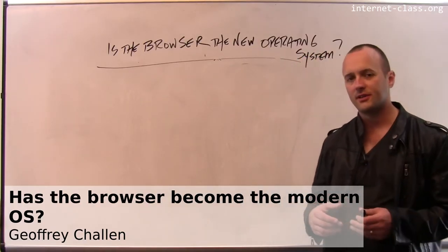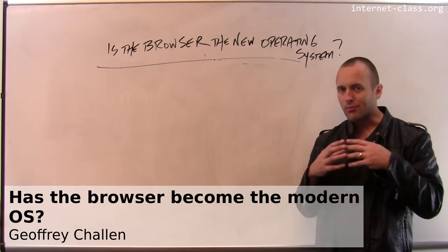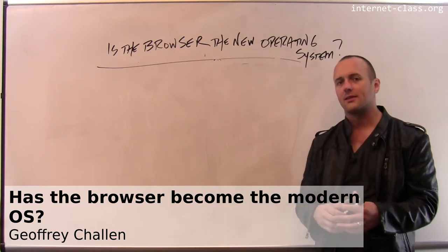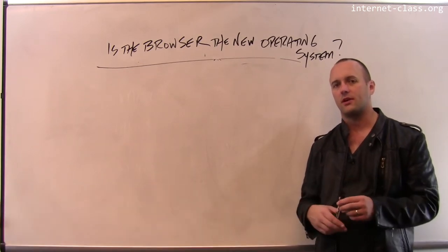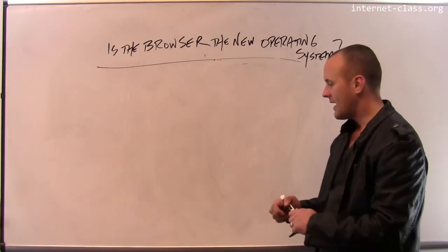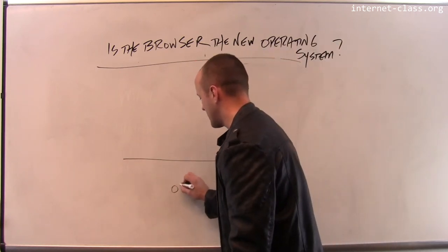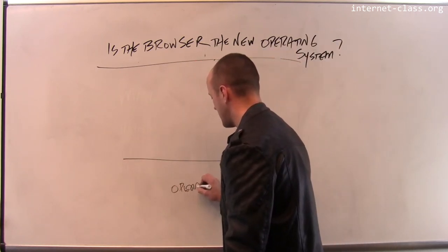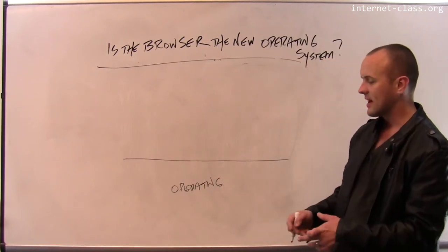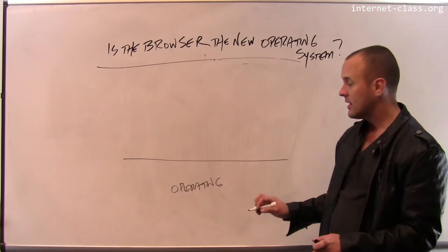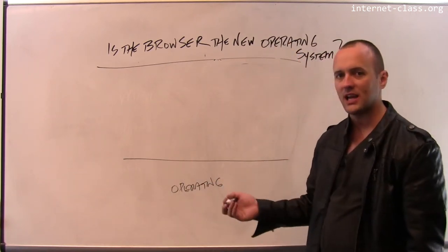As web applications have started to replace desktop applications, the web browser has started to look like a much older and more mature piece of software called an operating system. The operating system — something like Windows or Mac — is kind of the first thing installed on your computer, and it provides an interface for applications to use.